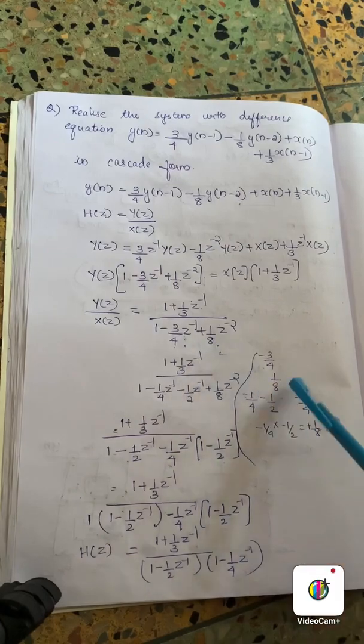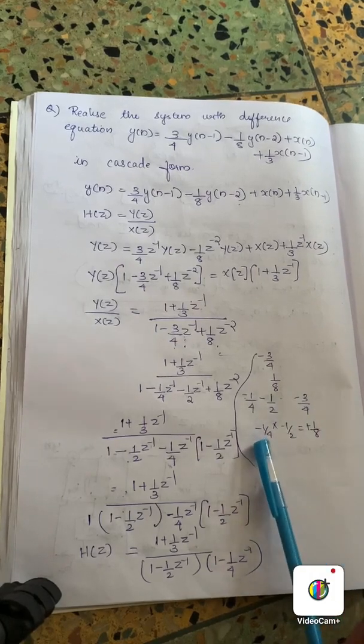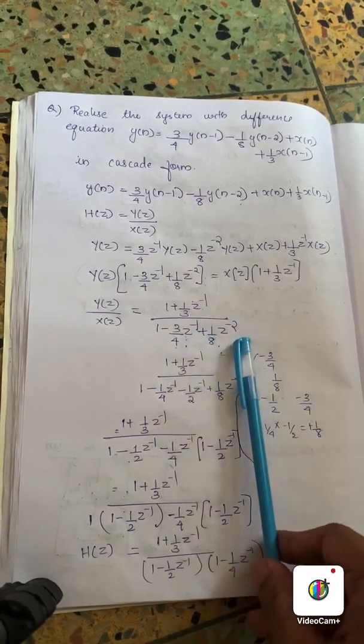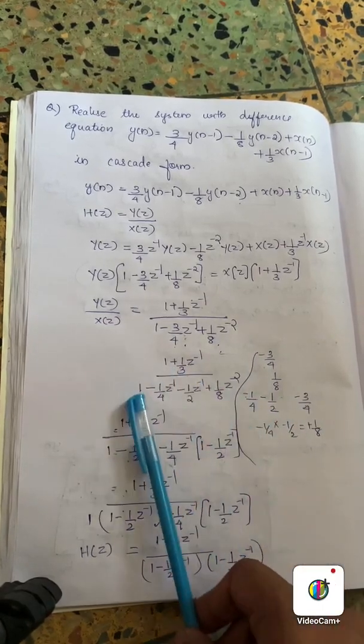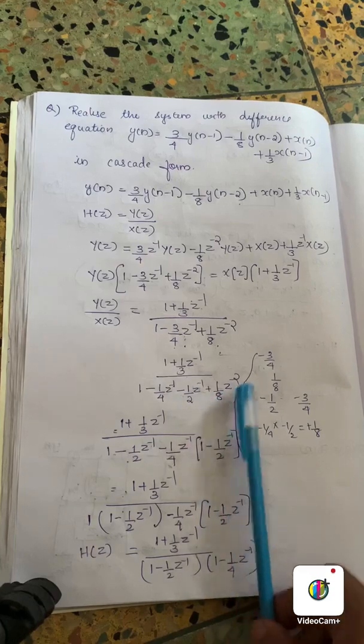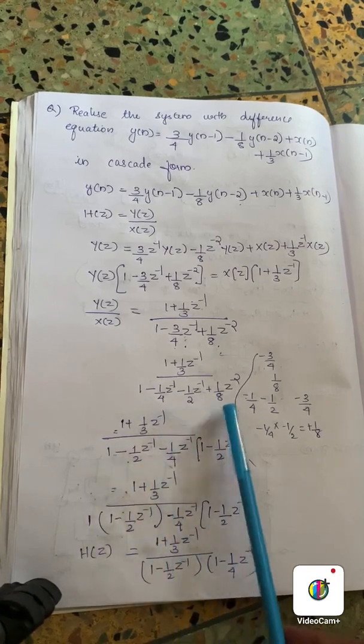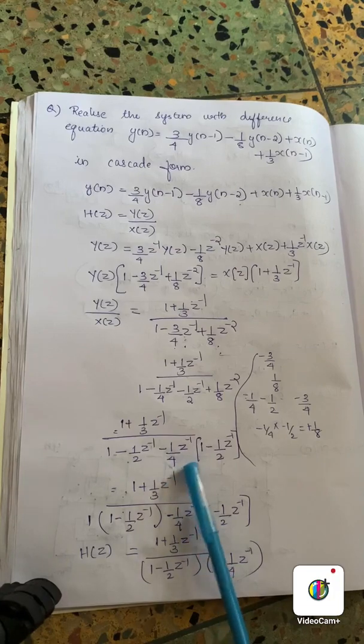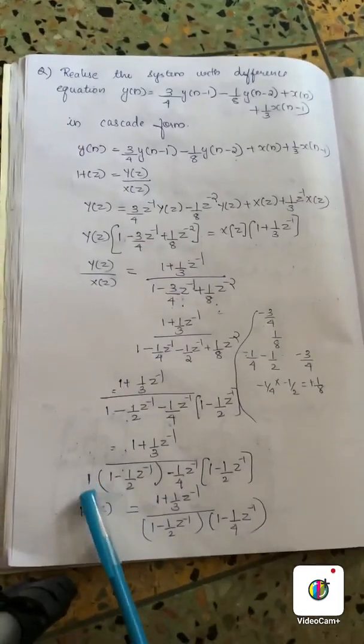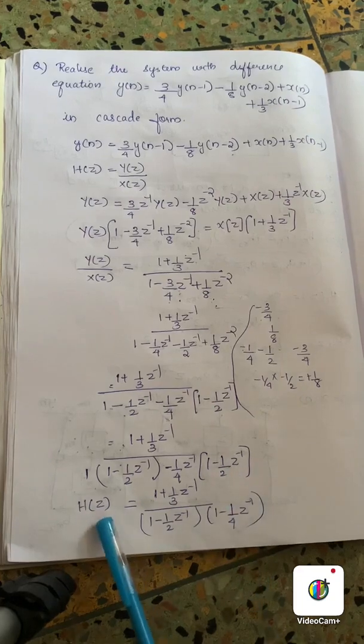We split this minus 1 by 4 minus 1 by 2, we add minus 3 by 4. So we do this factor. 1 plus 1 by 3 divided by 1 minus 1 by 4 minus 1 by 2 Z inverse plus 1 by 8 Z raise to minus 2. Taking minus 1 by 4 common, we get 1 plus 1 by 3 Z inverse divided by 1 into 1 minus 1 by 2 inverse minus 1 by 4 Z inverse into 1 minus 1 by 2 Z inverse.